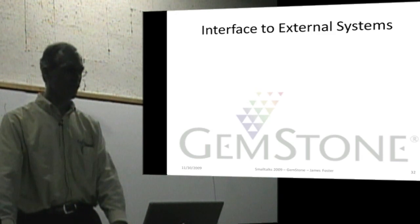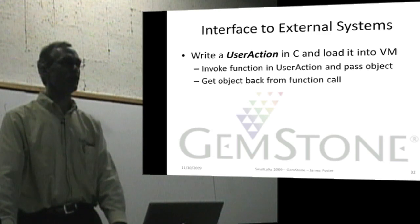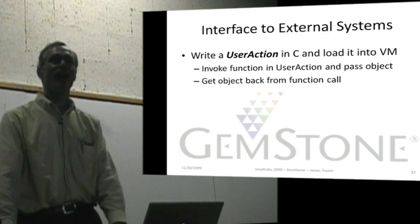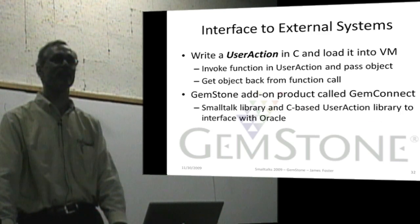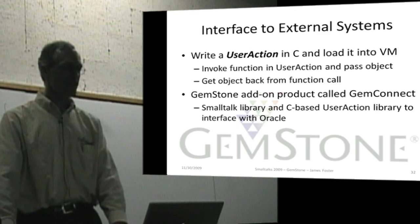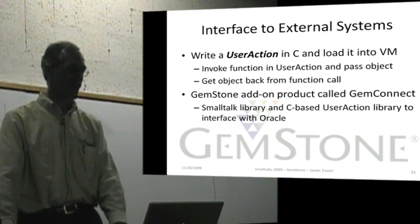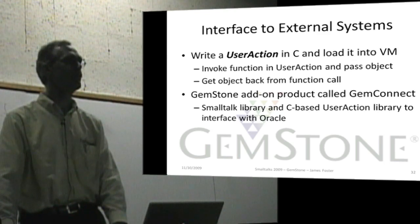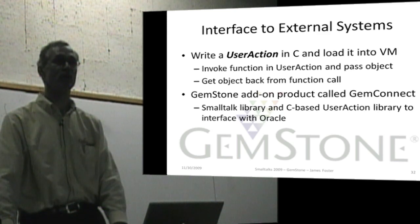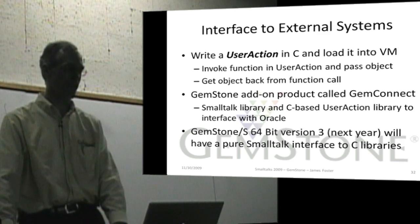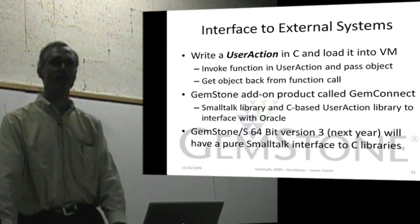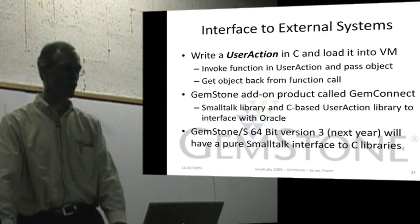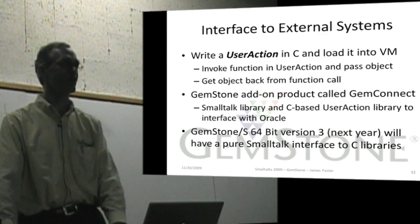GemStone provides the capability of interfacing to external systems. You can write a user action in C as a library and load it into GemStone. When you invoke a function on the user action from Smalltalk, you can pass it objects and it can interact. There's an add-on product called GemConnect that provides both a Smalltalk library and a C library that interfaces to an Oracle database. In version 3 of the 64-bit product, there will be a pure Smalltalk API to C libraries, which will make that even easier.